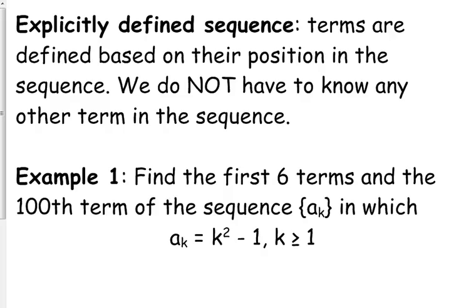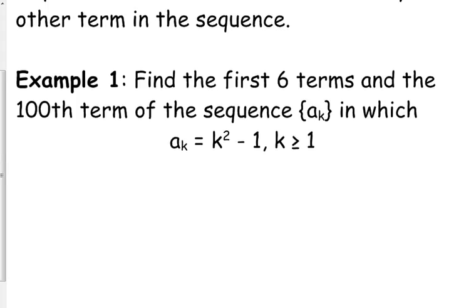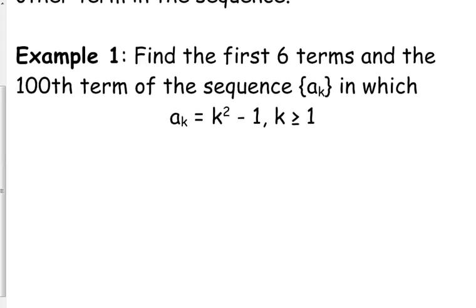Now, we can talk about what we call explicitly defined sequences. If it is explicitly defined, your terms are based on their position in the sequence. Is it the fifth term? Is it the tenth term? Is it the 100th term? You don't have to know any other term in the sequence if it's explicitly defined. For example, let's find the first six terms and the 100th term of this sequence in which we are told a sub k is equal to k squared minus 1 where k is greater than or equal to 1.